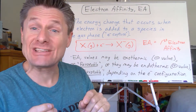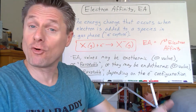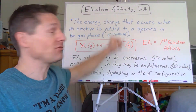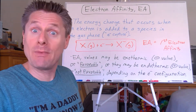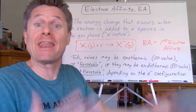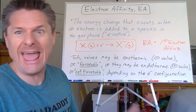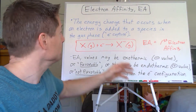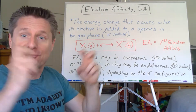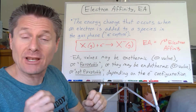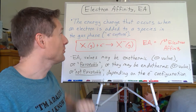Ionization energy is how much energy it takes to remove an electron to form a cation. Electron affinity is the amount of the energy change when you add an electron. Usually if it's neutral, it forms an anion, or you could add it to anything, really. So whatever energy change occurs when it captures an electron in the gas phase, by definition, is your electron affinity.